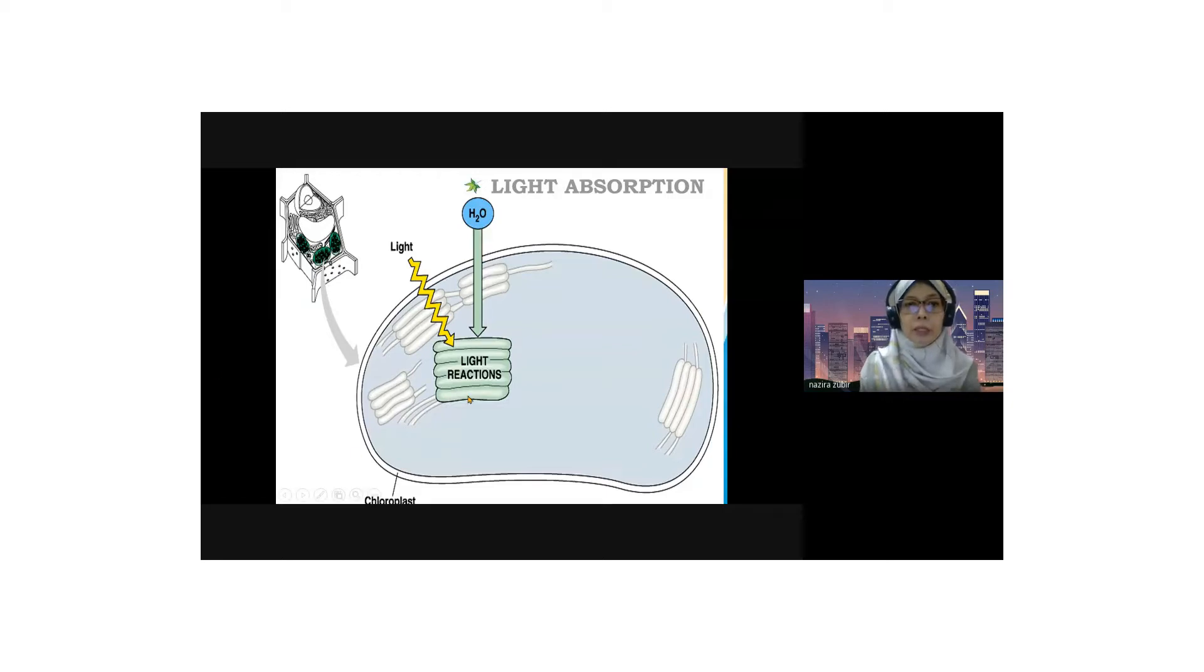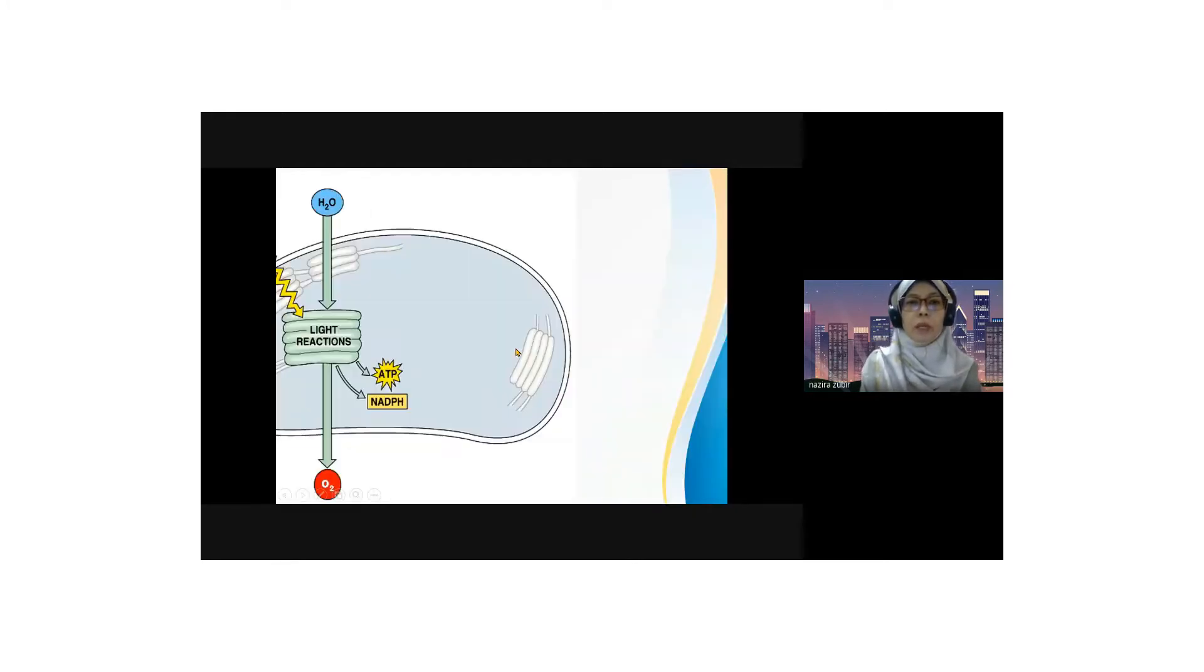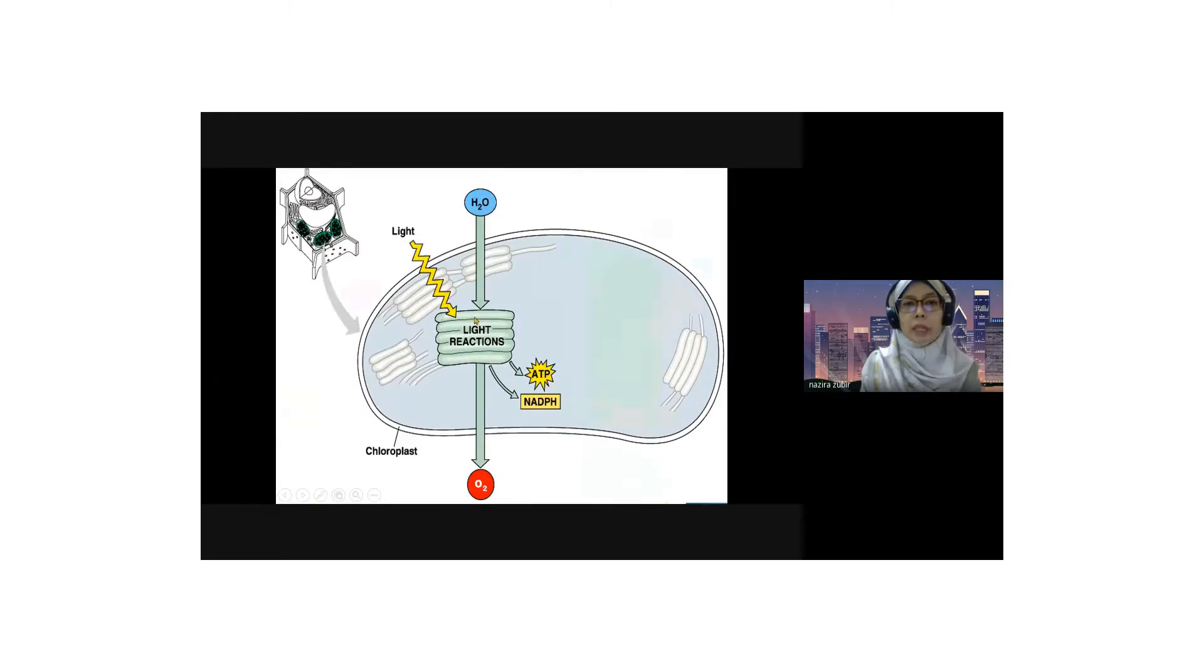This is the light reaction because it requires light, the photon of light, to strike the thylakoid membrane. Light reaction occurs in the thylakoid membrane and produces 18 ATPs and 12 NADPH. Apart from that, oxygen is produced. This is the light reaction, so we can call it the light-dependent reaction.